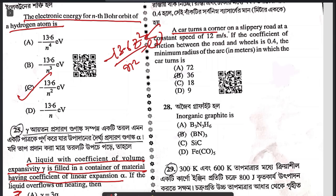Question 27: a car turns a corner on a slippery road at a constant speed of 12 m/s. If the coefficient of friction between the road and the wheel is 0.4, the minimum radius of the arc in which the car turns is B — 36 meters.